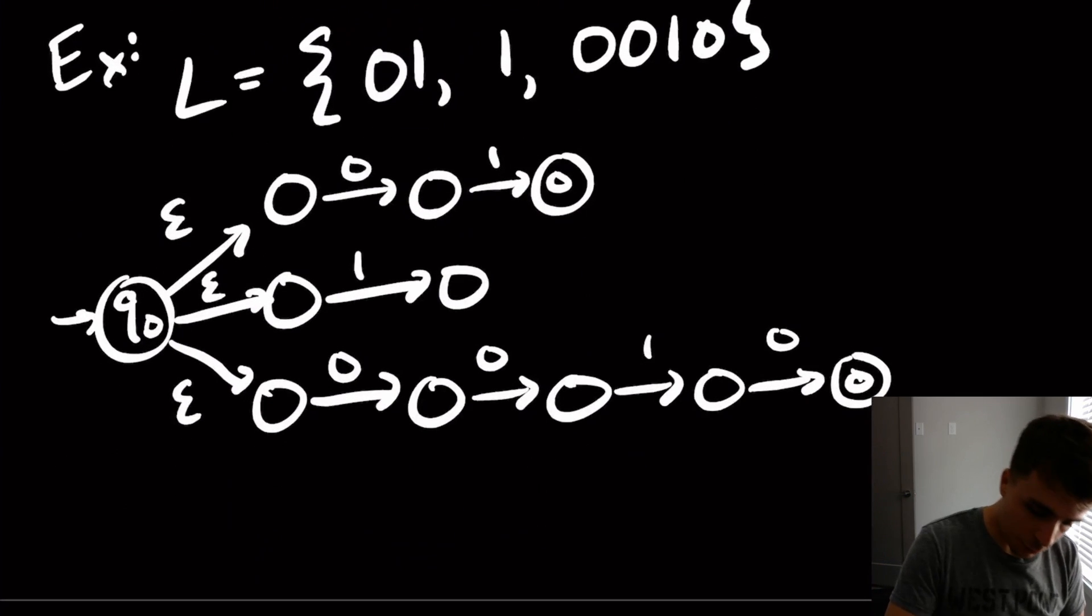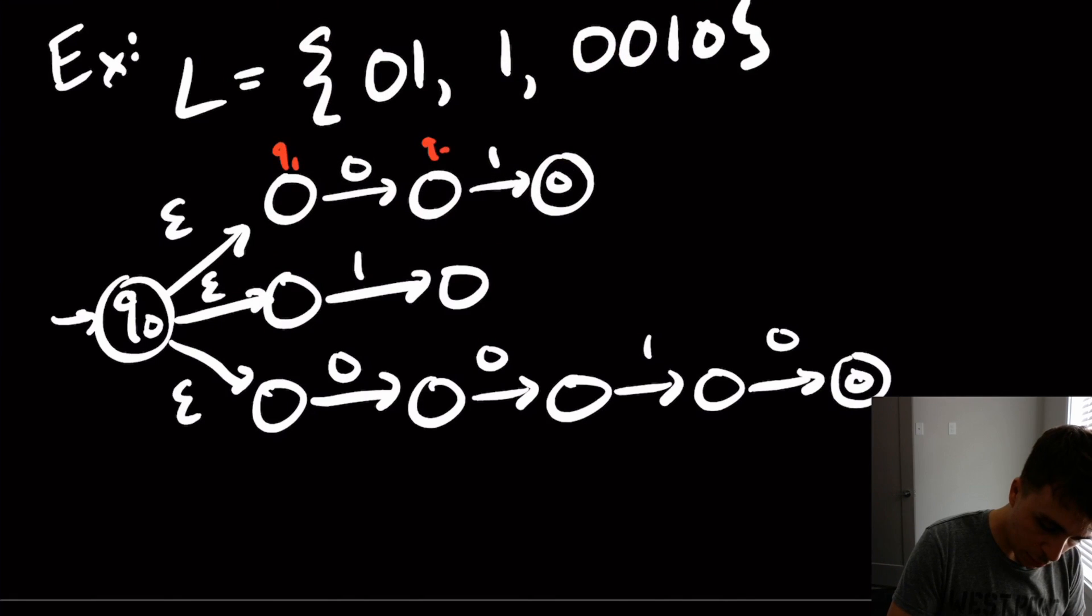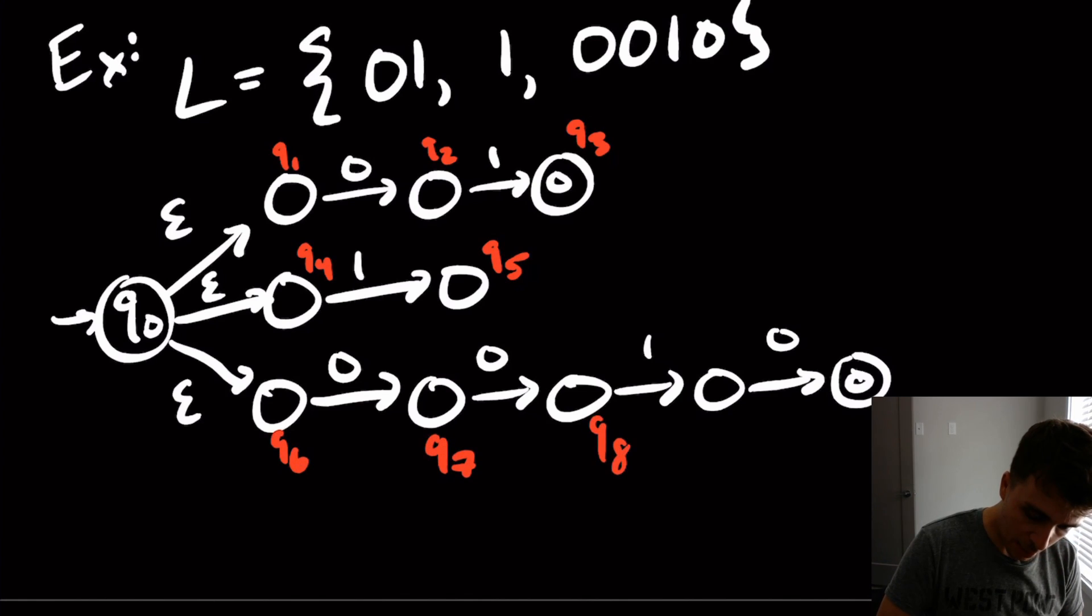So if we label these up. So let's call it q1, 2, 3, q4, q5, q6, q7, q8, q9, q10.